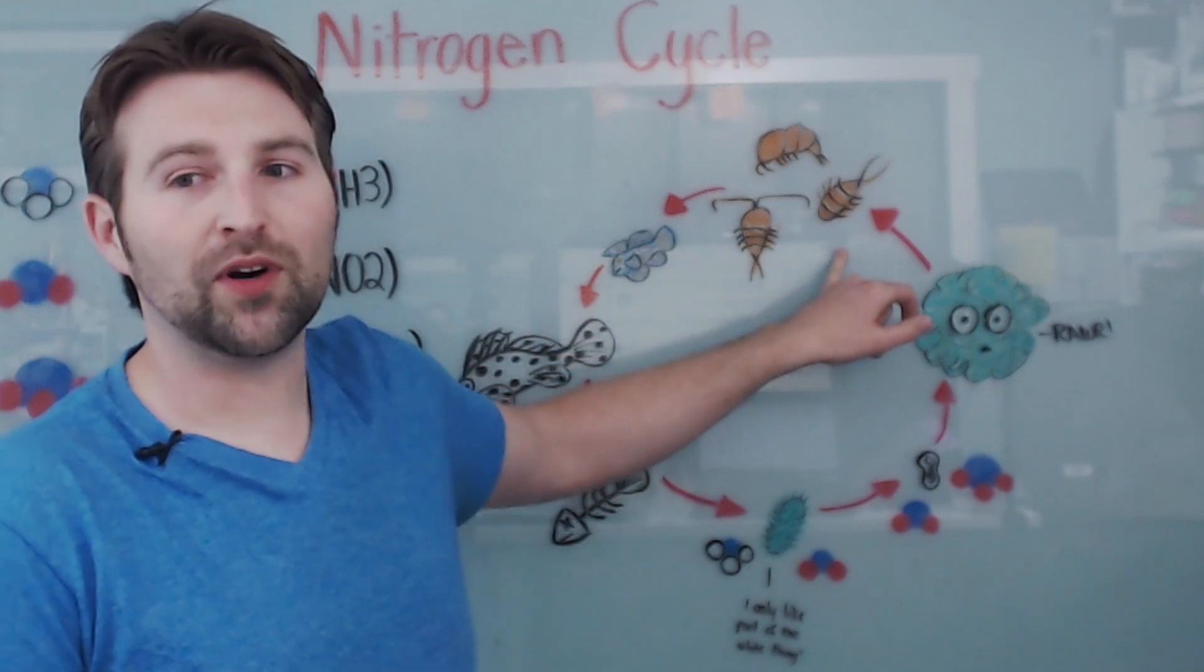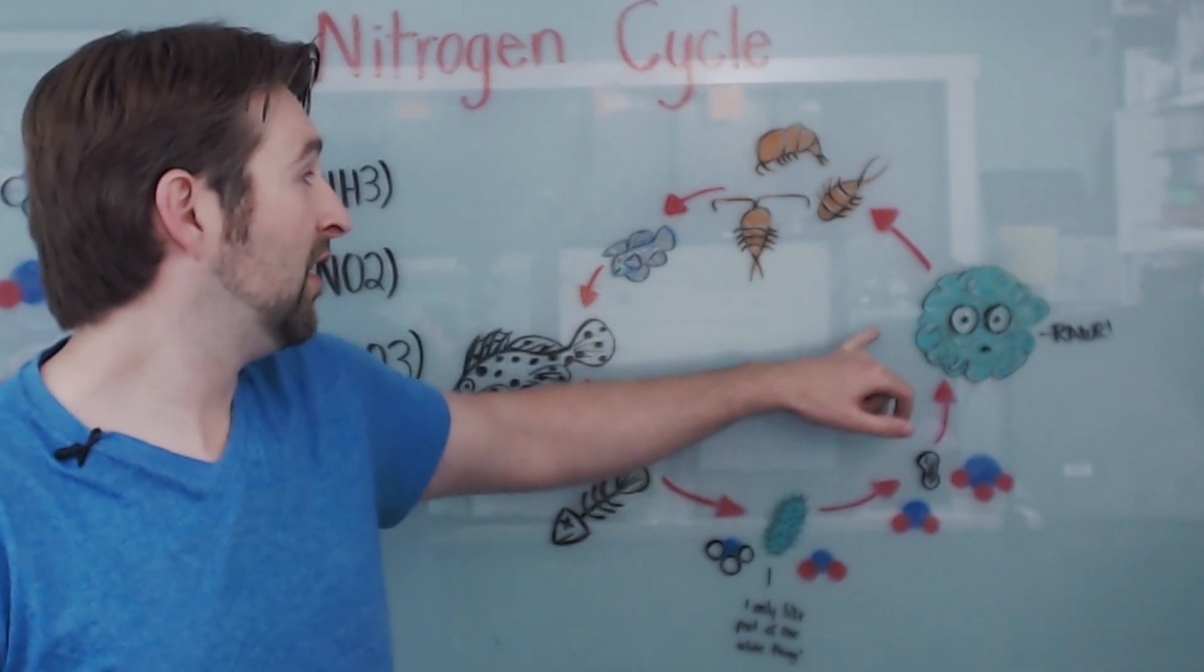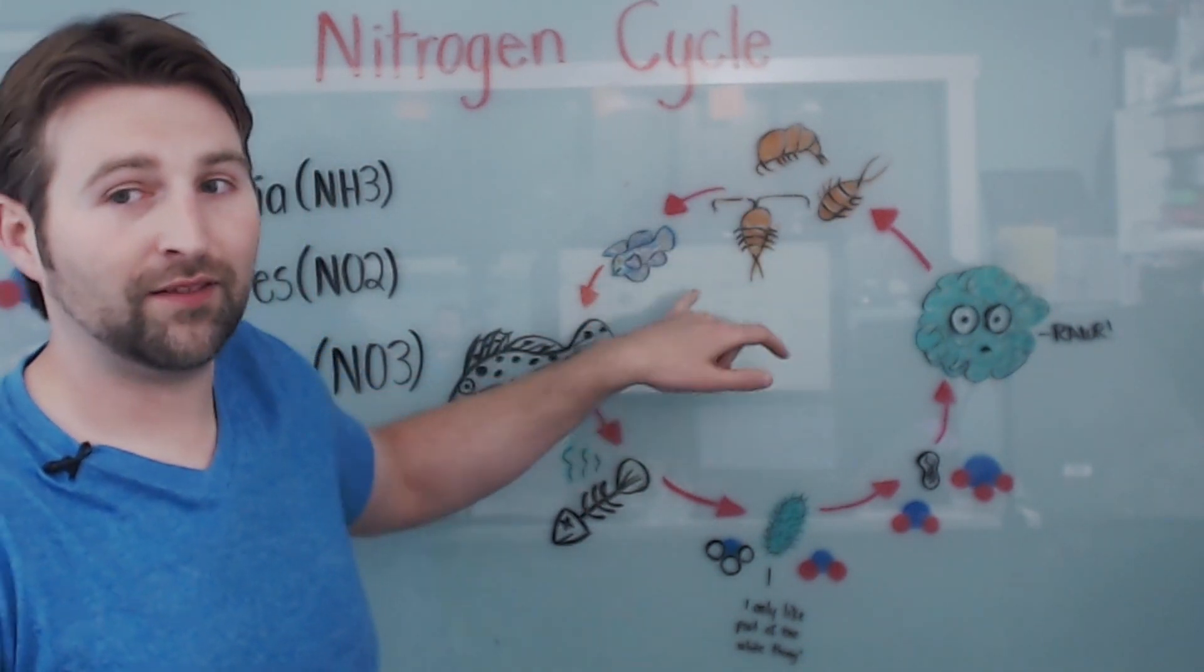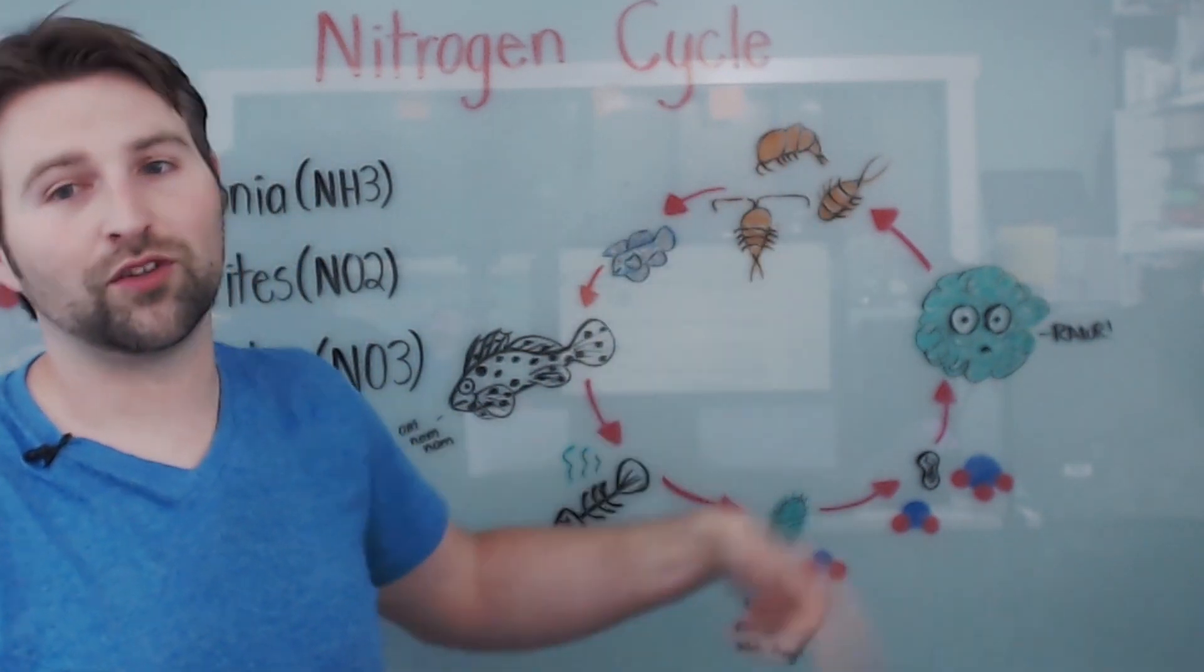There's also things like cleanup crew, like copepods and those type of critters, which will eat the algae in your tank. Now those little copepods are eaten by fish and other stuff, and then other fish and stuff could be eaten by bigger fish, and that's kind of how the circle of the cycle continues over and over again.